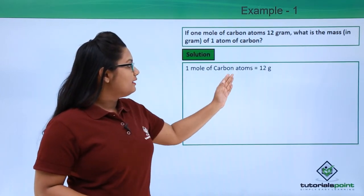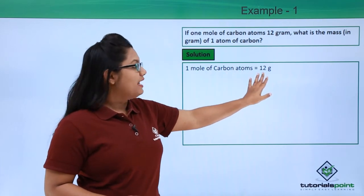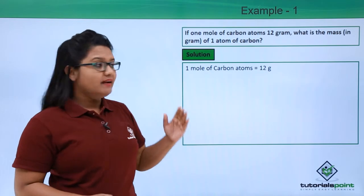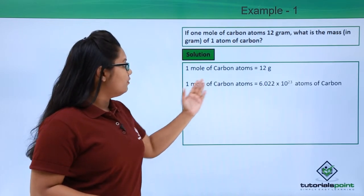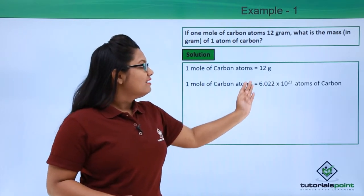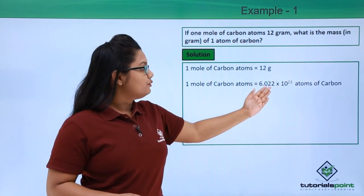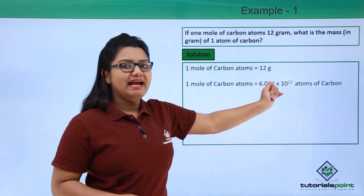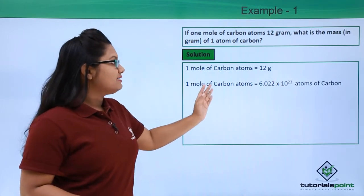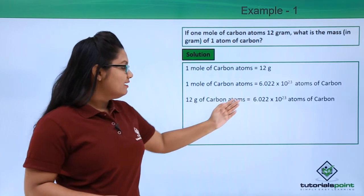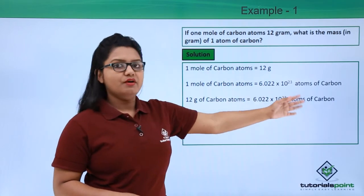One mole of carbon atoms weighs 12 grams as given in the question, and we also know that one mole of carbon atoms has an Avogadro number of atoms of carbon in it, which is 6.022 × 10^23 atoms of carbon. This essentially means that 12 grams of carbon has these many number of atoms of carbon.